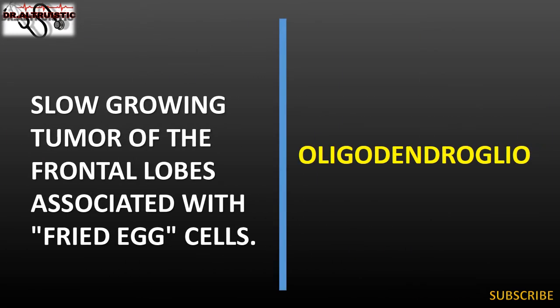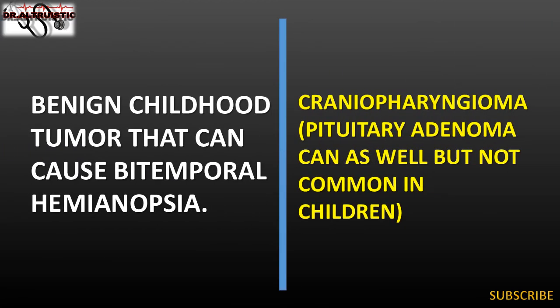Slow-growing tumor of the frontal lobes associated with fried egg cells: oligodendroglioma. Benign childhood tumor that can cause bitemporal hemianopsia: craniopharyngioma. Pituitary adenoma can as well, but is not common in children.